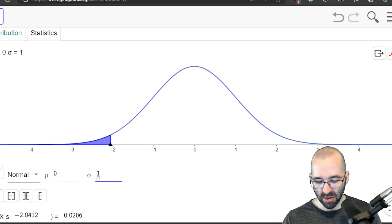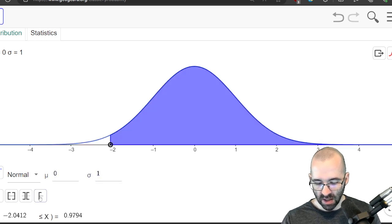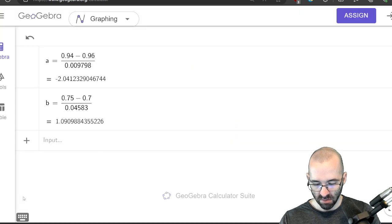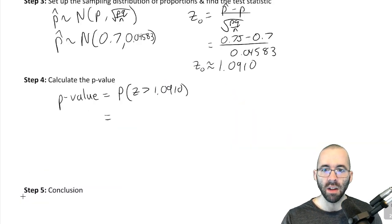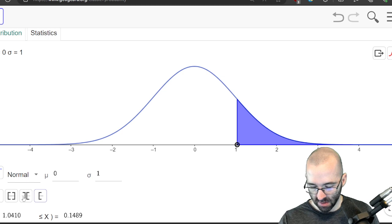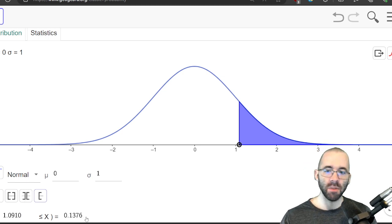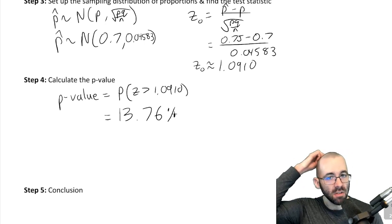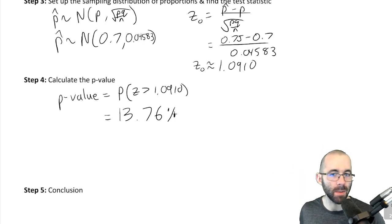Standard normal means mean of 0, standard deviation of 1. We need to be greater than, so we're going to use this button down here. Then we just type in 1.0910. And there's about a 13.76% chance of this happening. Not a big percent but certainly not unreasonable to expect this to happen.